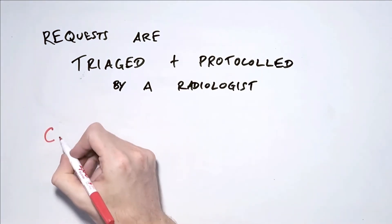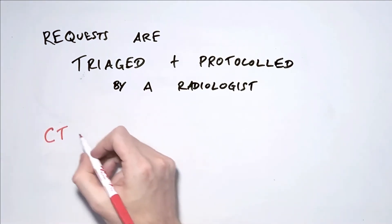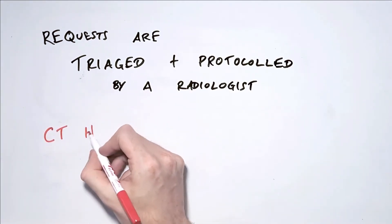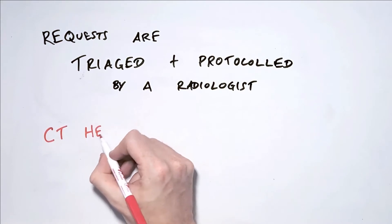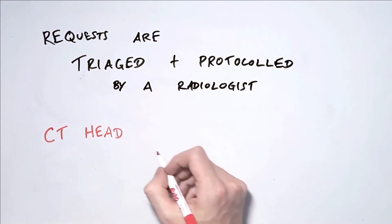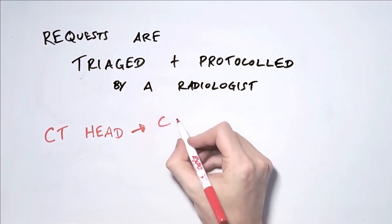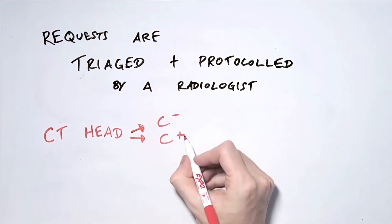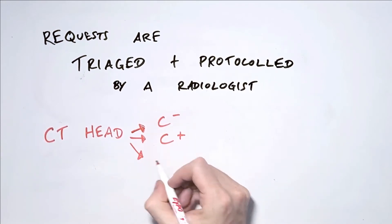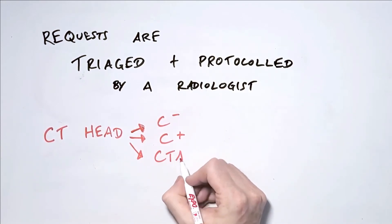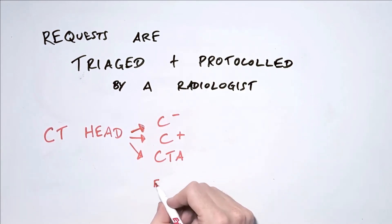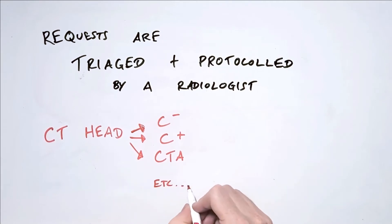In this example, the word CT head will generally mean a CT scan of the brain, but based on the indication and the clinical information provided, the radiologist may code this as a CT brain without contrast, or a CT brain with contrast, or maybe a CT angiogram of the brain, or a CT venogram, or a CT scan of the temporal bones, or the orbits, or something more specific.